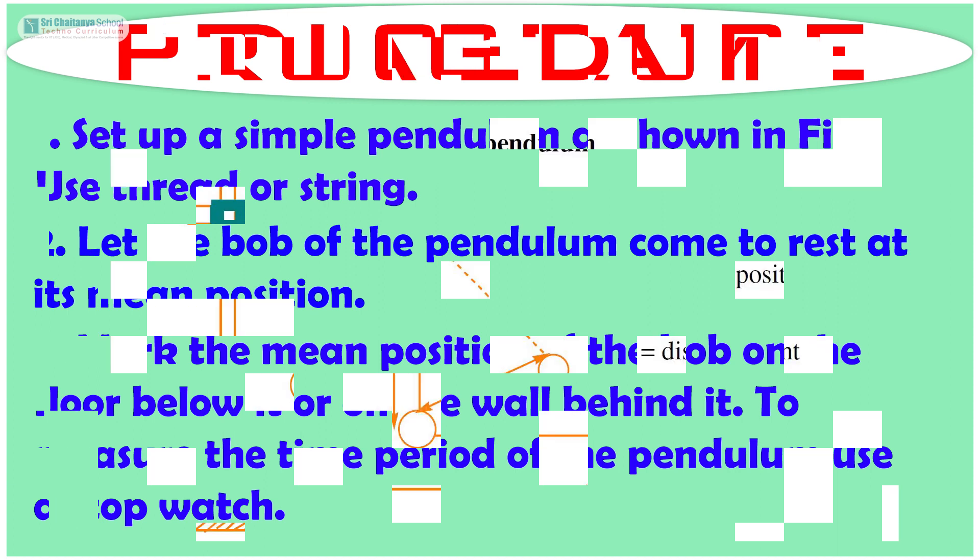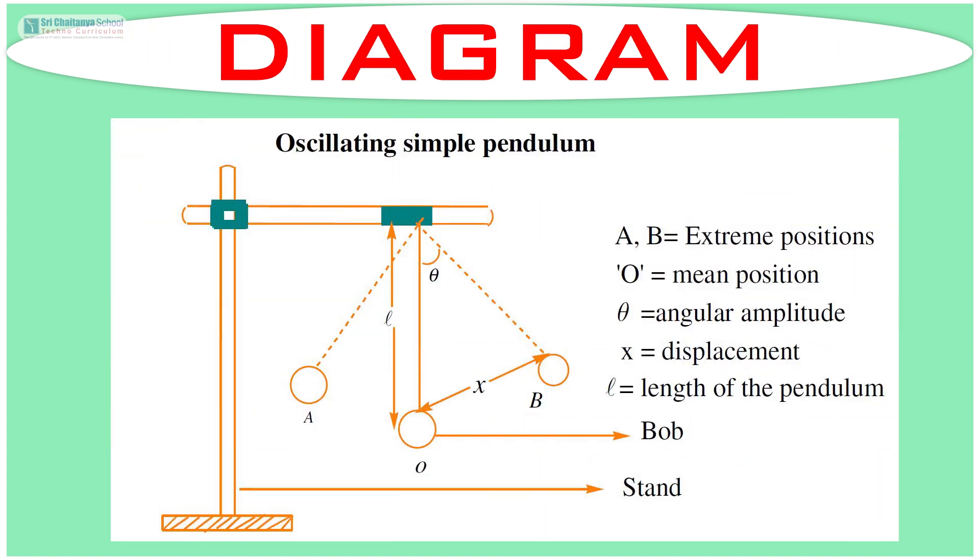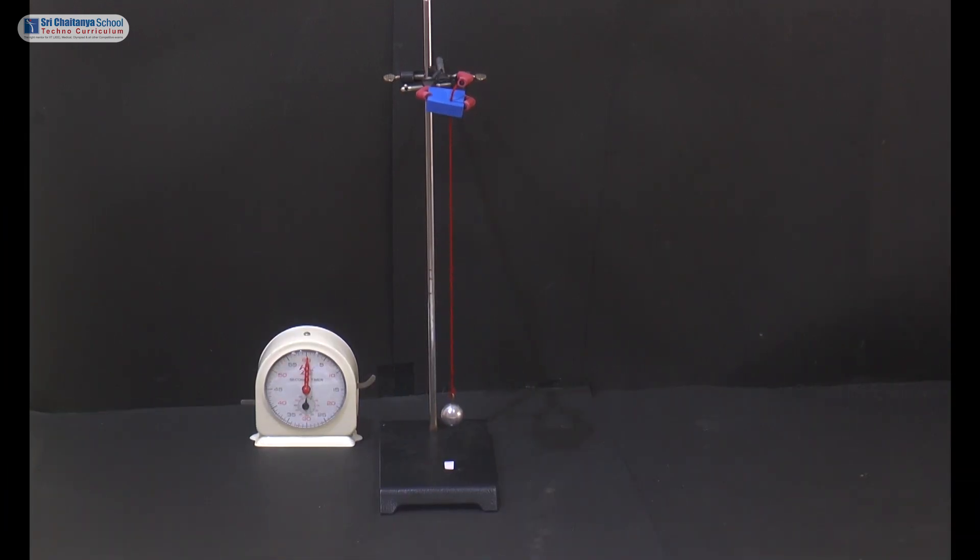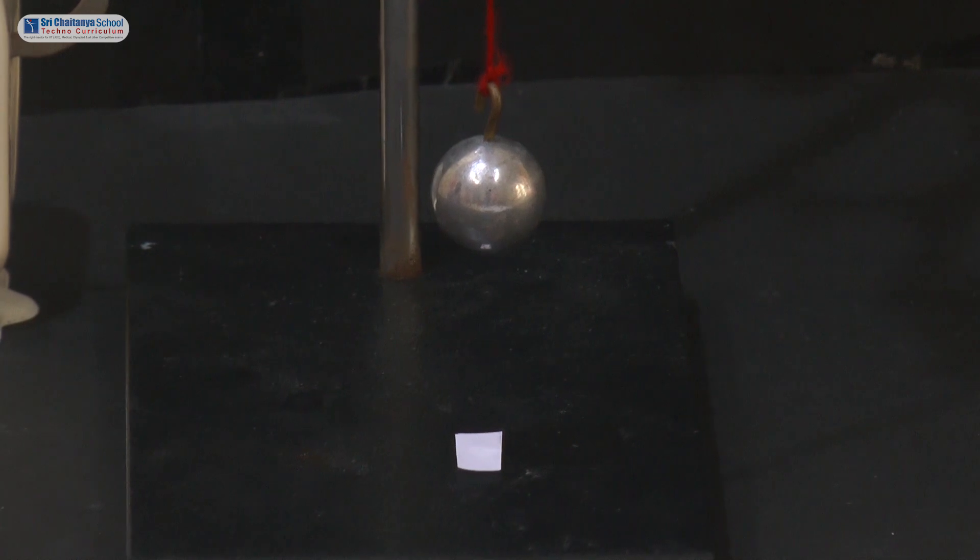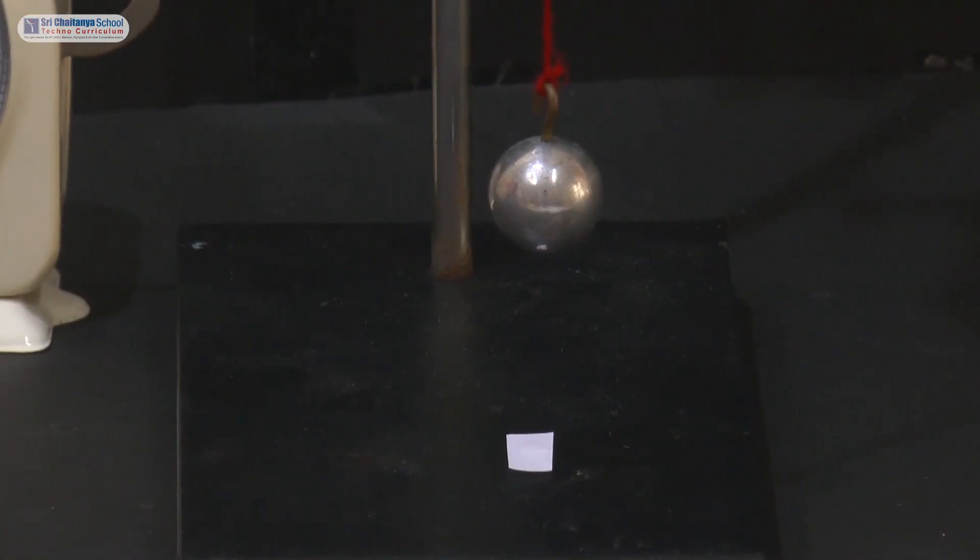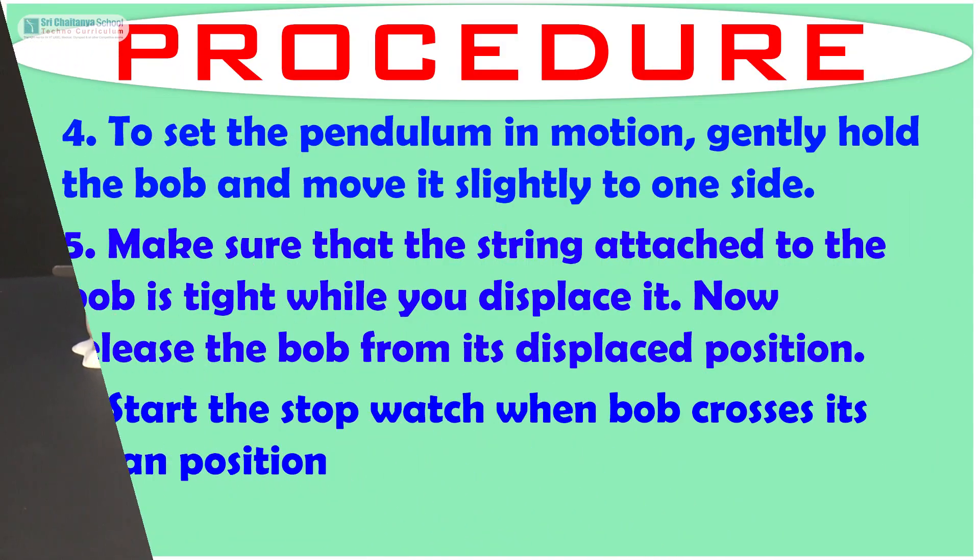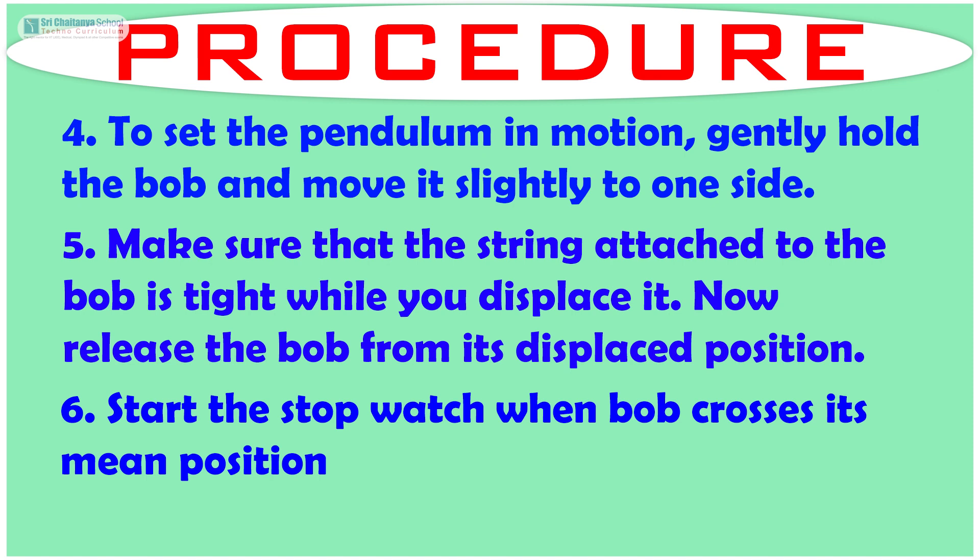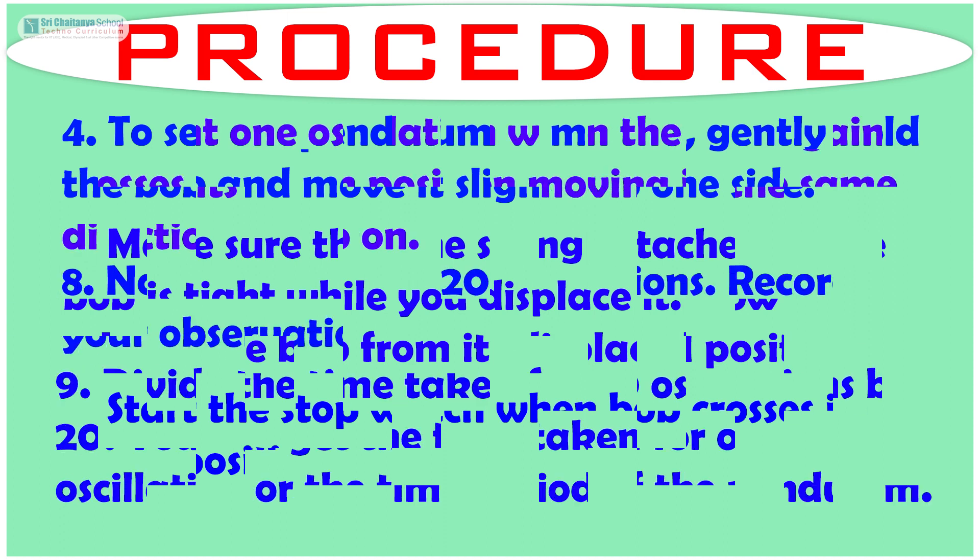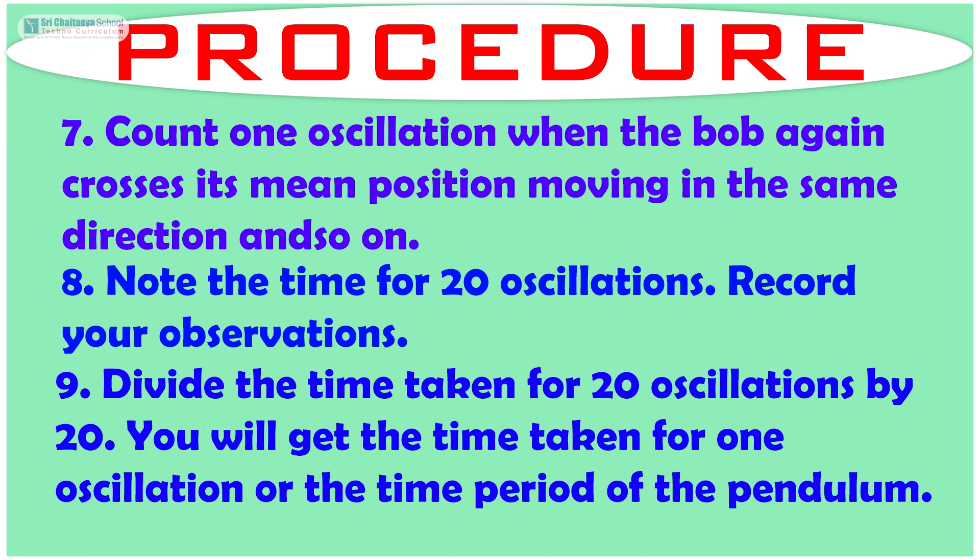Now it is time to see the procedure. Set up a simple pendulum as shown in the figure. Let the bob of the pendulum come to rest at its mean position. Mark the mean position of the bob on the floor below it or on the wall behind it. To measure the time period of the pendulum, use a stop watch. To set the pendulum in motion, gently hold the bob and move it slightly to one side. Make sure that the string attached to the bob is tight while you displace it. Now release the bob from its displaced position. Start the stop watch when bob crosses its mean position. Count one oscillation when the bob again crosses its mean position, moving in the same direction and so on.